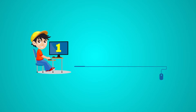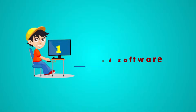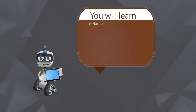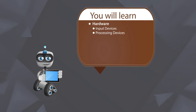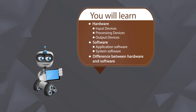Chapter 1: Computer Hardware and Software. You will learn about hardware, input devices, processing devices, output devices, software, application software, and system software.